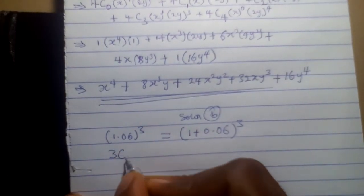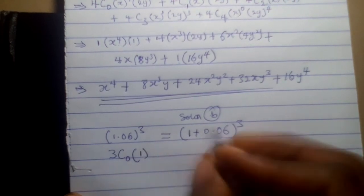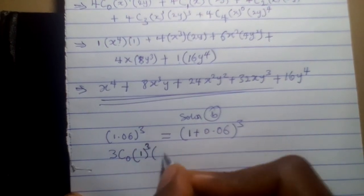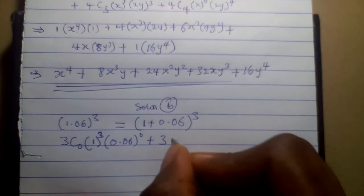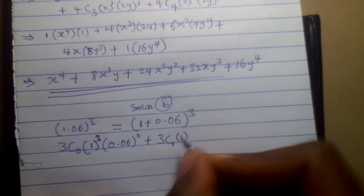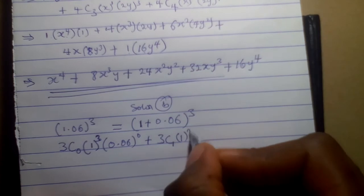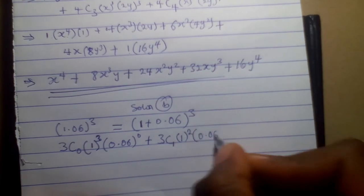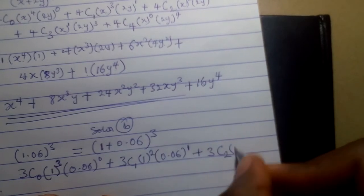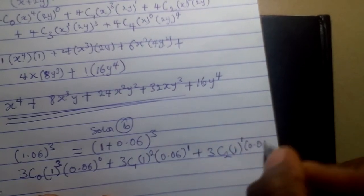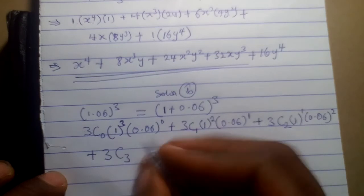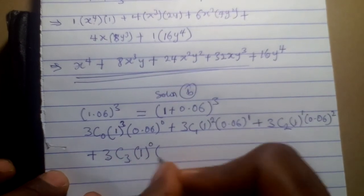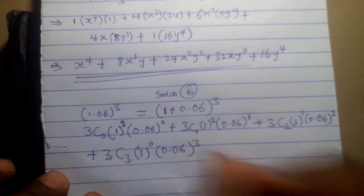The first term is 3C0 times 1 raised to (3 minus 0), which is 3, times (0.06) raised to 0. Plus 3C1 times 1 raised to (3 minus 1), which is 2, times (0.06) raised to 1. Plus 3C2 times 1 raised to (3 minus 2), which is 1, times (0.06) raised to 2. Plus 3C3 times 1 raised to (3 minus 3), which is 0, times (0.06) raised to 3.